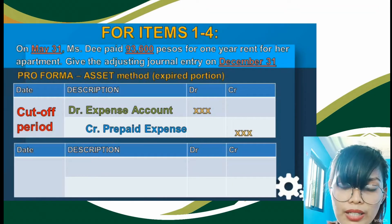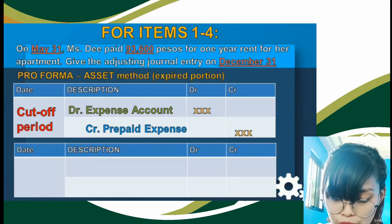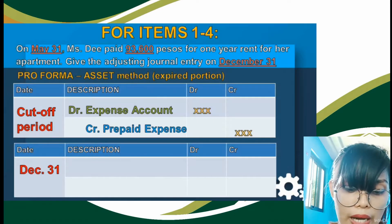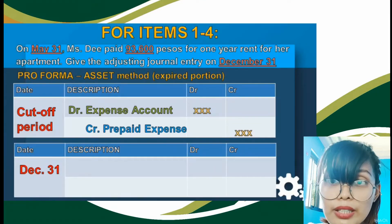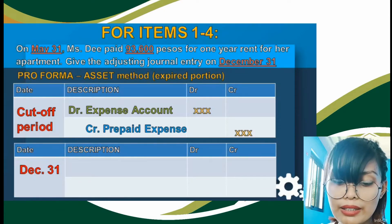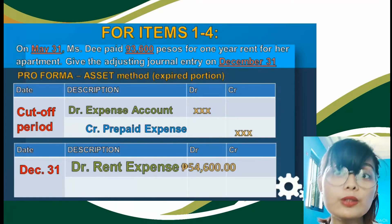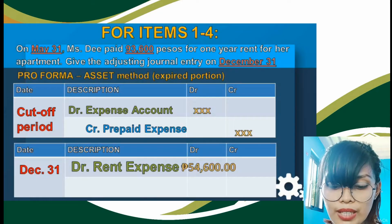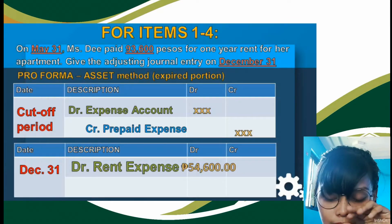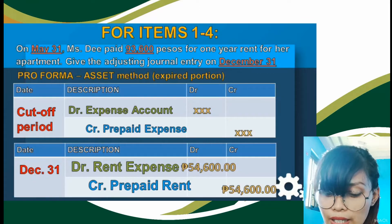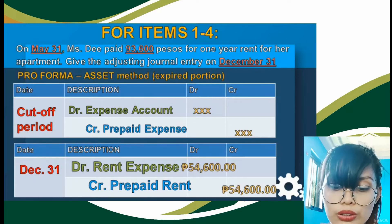We follow the pro forma for asset method: debit expense account, credit prepaid expense. The cut-off date is December 31. Since Ms. T paid for rent, the expense account is rent expense. So our adjusting entry is: debit rent expense P54,600 and credit prepaid rent P54,600. That is our adjusting entry for the asset method under prepayment.